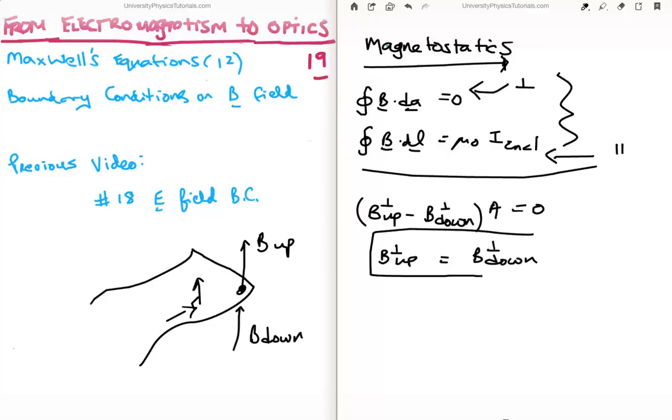Whereas with the electric field it was the tangential component that was continuous, it is in fact for the magnetic field the other way around.